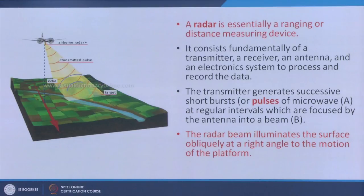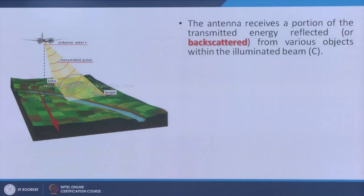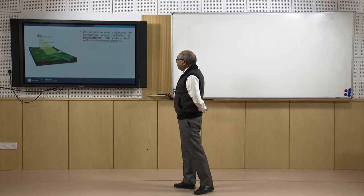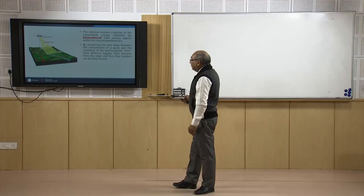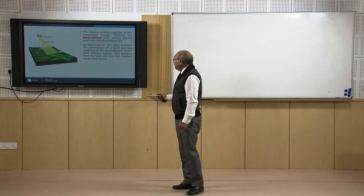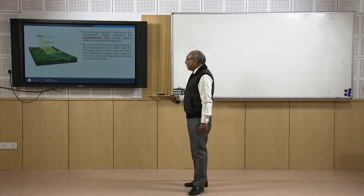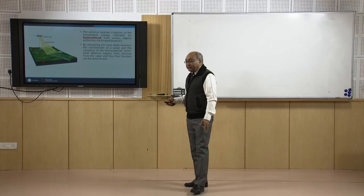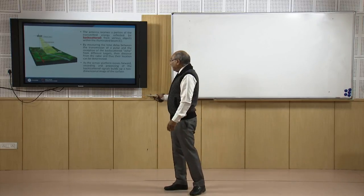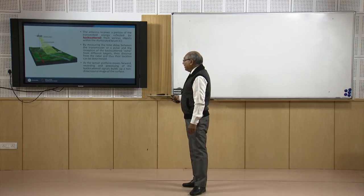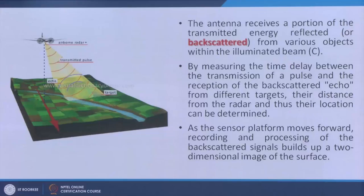If the beam were nadir, the satellite would move off and not be able to collect the backscatter, unless we had a very huge antenna — which is not possible on spaceborne platforms. The antenna receives the portion of transmitted energy reflected or backscattered from objects within the illuminated beam. By measuring the time delay between transmission and reception of the backscatter (or echo), distances and locations of targets are determined. As the sensor platform moves forward, a two-dimensional image of complex numbers is built up.